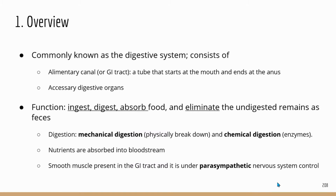A quick overview: the digestive system is composed of two parts. The first is a continuous tube that starts from the mouth and ends at the anus — that's the alimentary canal, often known as the GI tract, which is the pathway where food travels. The second part is the accessory digestive organs, which are not directly in the GI tract but are connected to the alimentary canal. These organs make substances that aid digestion — for example, the pancreas secretes digestive enzymes to supplement what's already in the stomach and small intestine.